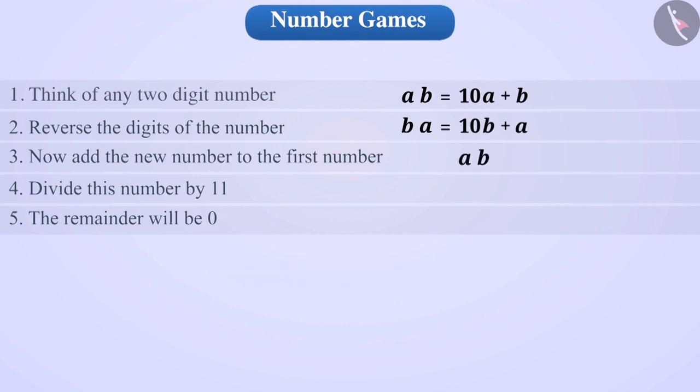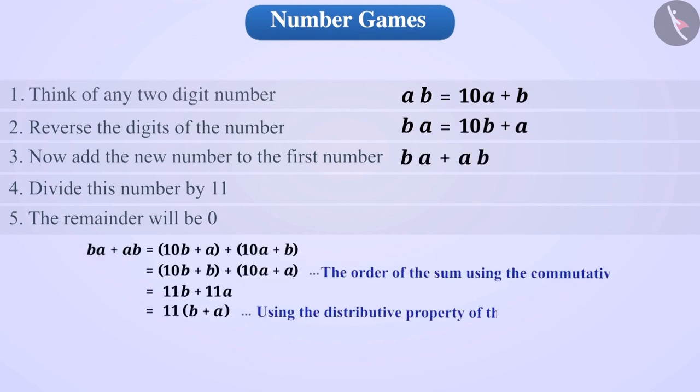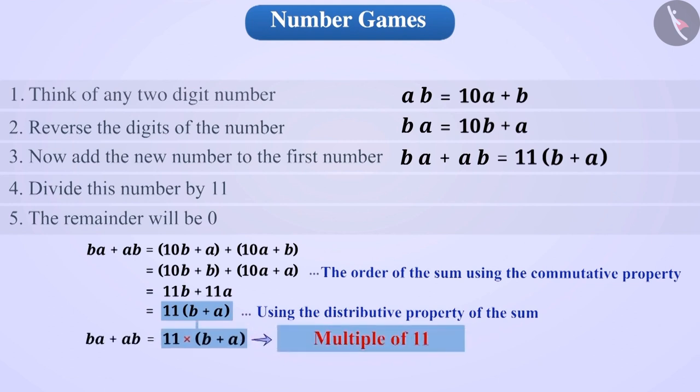Let's add AB and BA. By adding, we get BA plus AB is equal to 11 times B plus A in brackets. By looking at this statement, you will realize that the sum of BA and AB is always a multiple of 11.